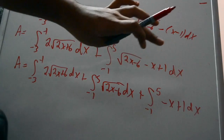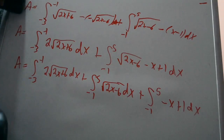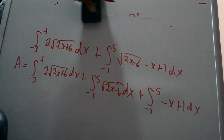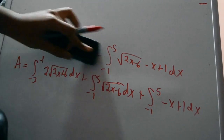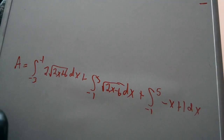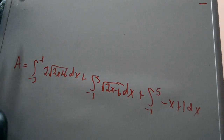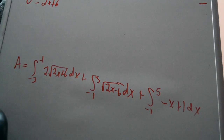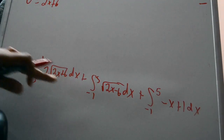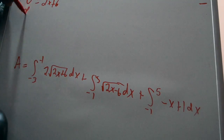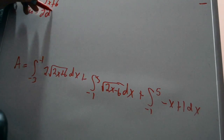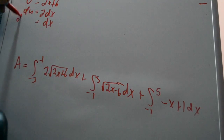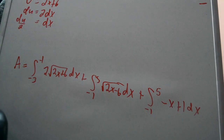To handle the square root terms, we use a u-substitution. Let u equal 2x plus 6. Then du equals 2 dx, so dx equals du over 2. Wherever dx appears, we substitute du over 2. The 2 in the numerator and the 1/2 from the substitution cancel out.